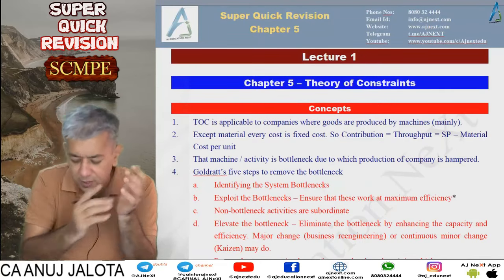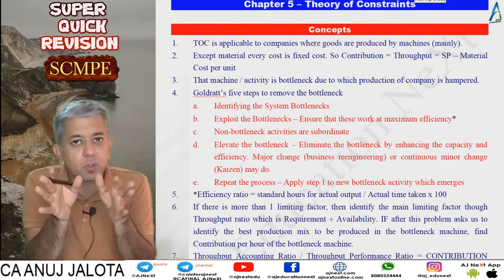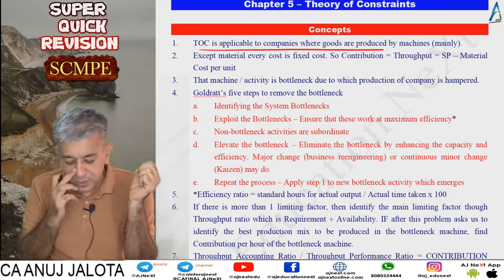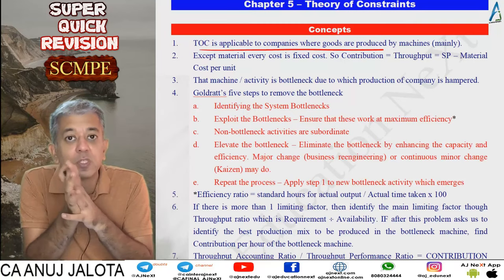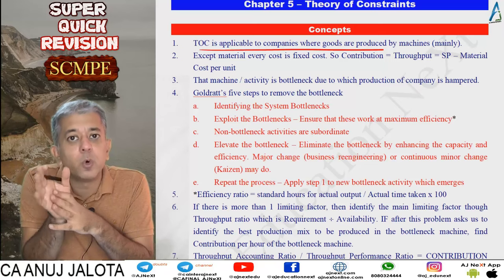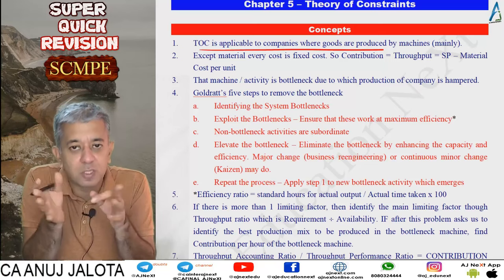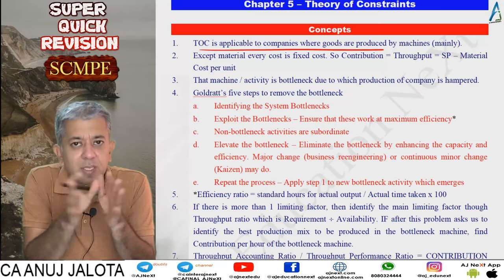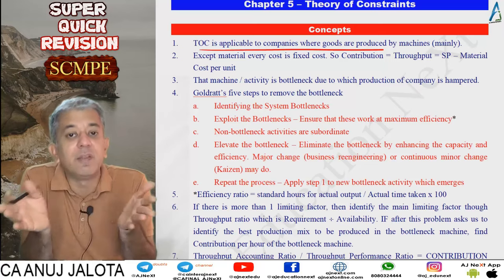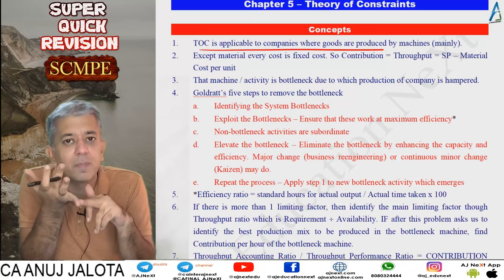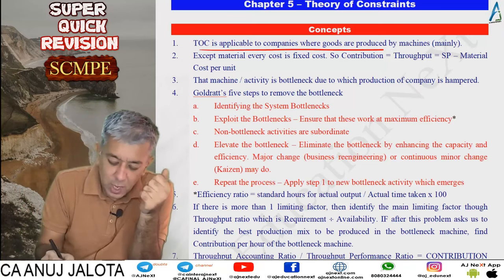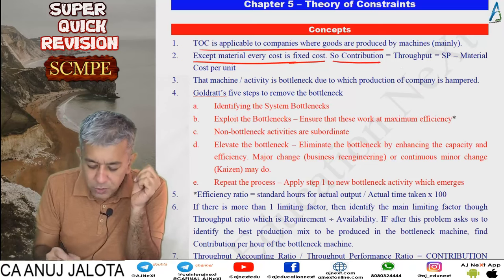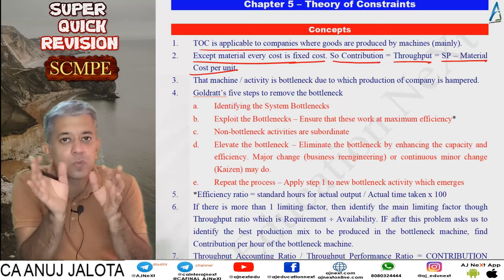TOC is applicable to companies where goods are produced mainly by machines. Every other cost — labor, factory overheads — all those costs are fixed in nature. So for this chapter, contribution is redefined: contribution will be selling price minus material cost. This is also called throughput. Except material, every other cost is fixed cost. So contribution equals throughput, computed as selling price minus material cost per unit.